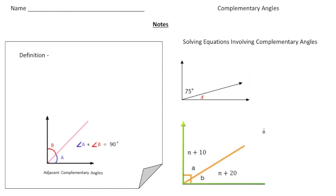So what exactly are Complementary Angles? Complementary Angles have a sum of 90 degrees.